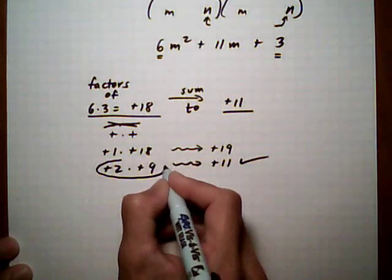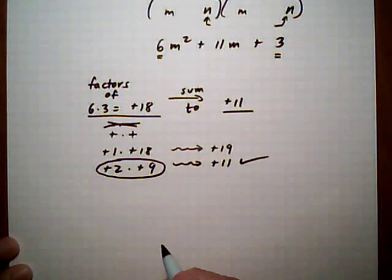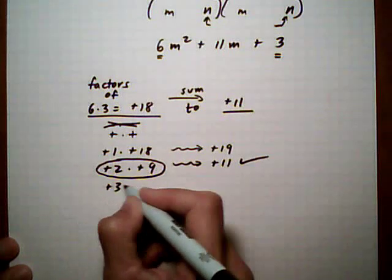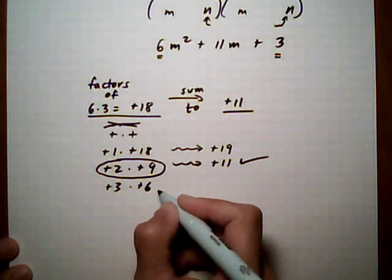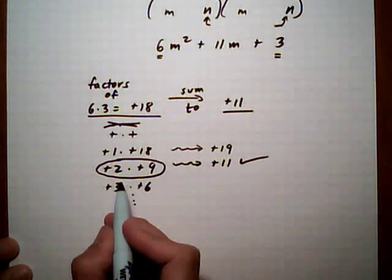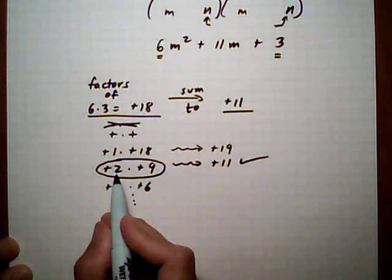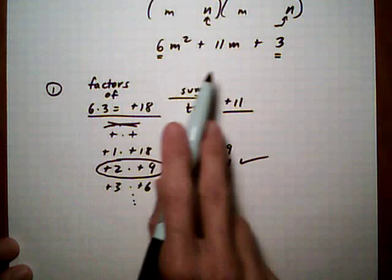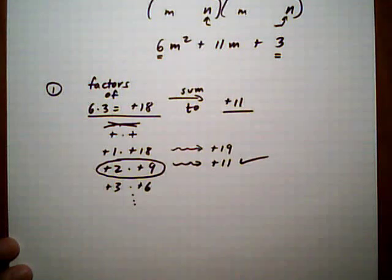As soon as you find the one that gives you the right sum, you stop. If we hadn't found it yet, we would keep going. We would do 3 times 6 and go through all the possibilities. But we have the 2 times 9. So this was our very first step for the factoring by the grouping method. Find the factors of first times the last term that sum to the middle term.